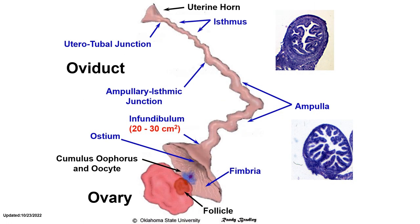The oviduct is divided into a number of parts. Starting at the end closest to the ovary, we have the infundibulum, the ampulla, the ampullary-isthmic junction, the isthmus, and the utero-tubal junction. The infundibulum is the funnel-shaped end of the oviduct. Its edges have finger-like projections called fimbriae. At ovulation, the fimbriae and infundibulum catch the ovulated egg and transport it through the osteum into the ampulla.